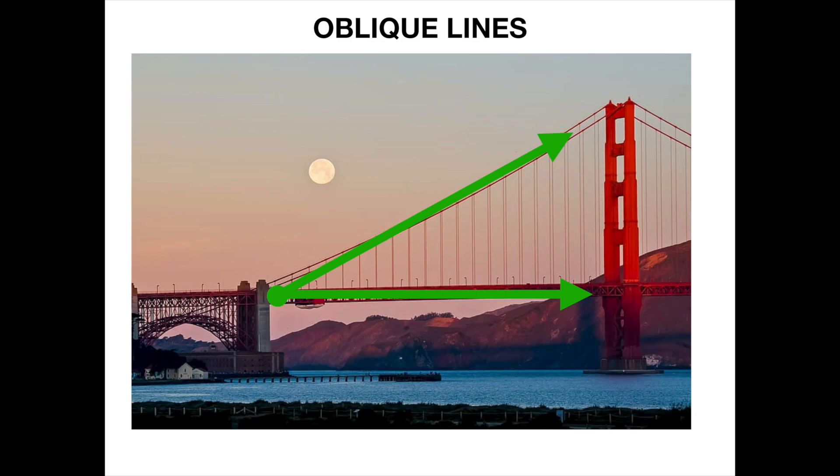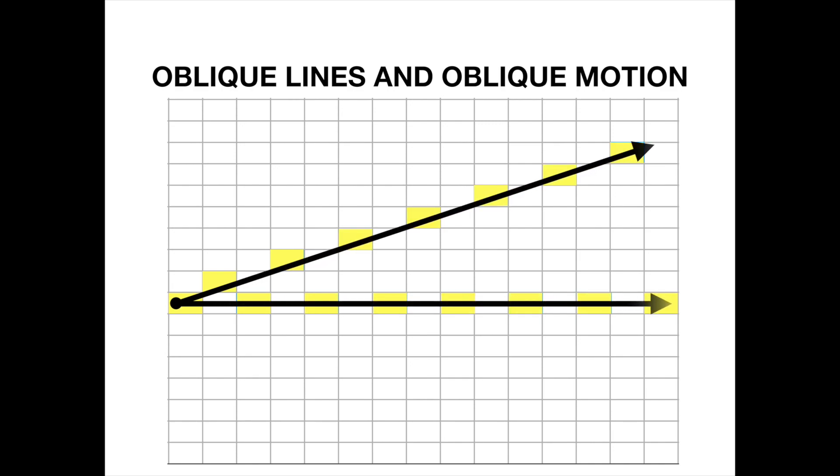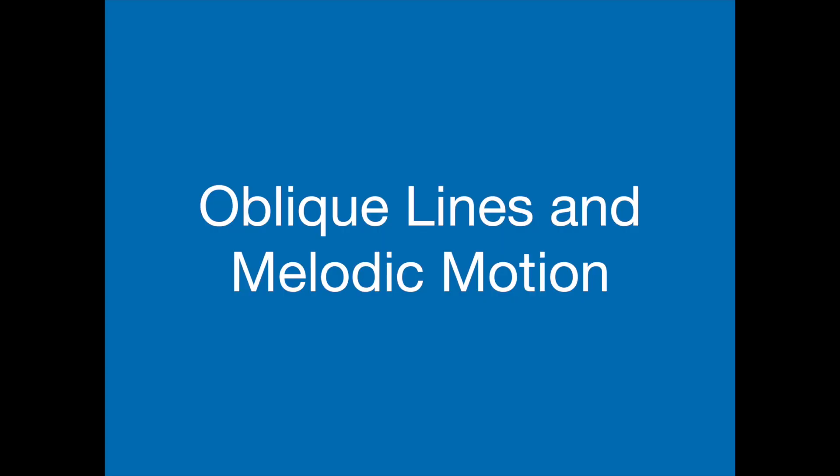Let's listen to oblique motion in two melody lines. In music, oblique motion is very specific with one melody line staying put and not moving up or down away from its note. The second melody line gradually moves away, up or down, from the stationary notes. Let's listen to oblique motion in two melody lines.